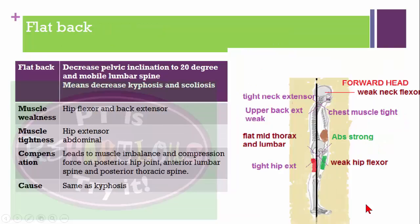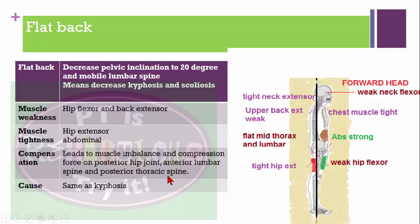Flat back posture means decreased pelvic inclination to about 20 degrees (normal is 30 degrees), with decreased kyphosis and scoliosis. Hip flexors are weak, and back extensors are also weak. Abdominal muscles are stronger, and hip extensors are tight. This leads to posterior tilting of the pelvis, causing muscle imbalance and compression of the posterior hip joint and anterior lumbar spine and posterior thoracic spine.